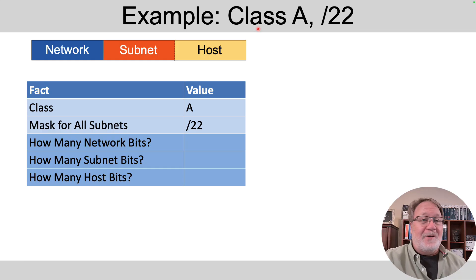So here's an idea. If you're subnetting some class A network, and your one and only one mask is slash 22, here's the analysis that gets you to the classful view of the size of the fields and then the calculations.